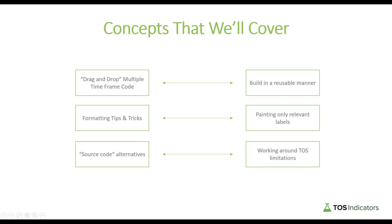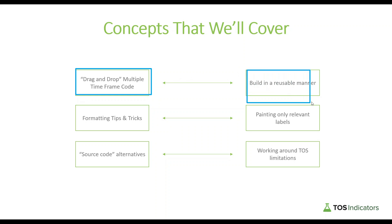There are a few different concepts we're going to cover in this tutorial. The first is around a drag-and-drop multiple time frame code module that we created as part of the MTF DMI indicator. That's going to be our main building block here. We discussed the importance of writing code in a way that we can easily lift and reuse it for new purposes. Because we had written that code in that manner, we can now take the same framework and use it for our squeeze components — or even EMA crossovers or your own personal indicators. That's the benefit of building code in a reusable way.